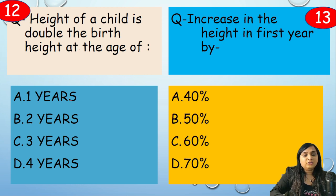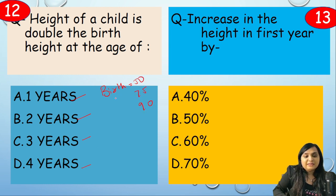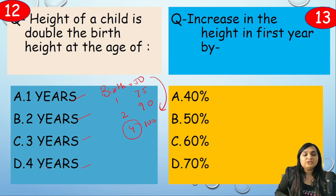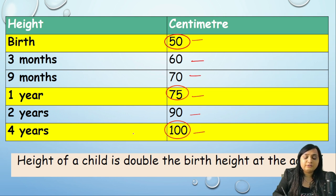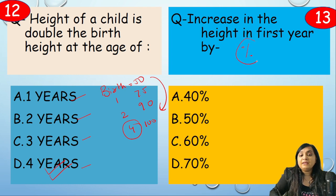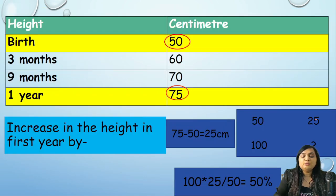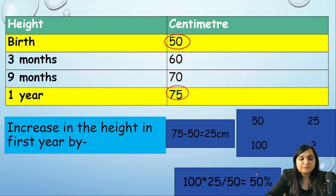Next question: height of a child doubles the birth height at what age — 1 year, 2 years, 3 years, or 4 years? Birth height is 50 cm; 1 year is 75 cm; 2 years is 90 cm; 4 years is 100 cm. Since 50 cm doubles to 100 cm at age 4 years, the correct answer is option D, 4 years. Milestones: 3 months 60 cm, 9 months 70 cm, 1 year 75 cm, 2 years 90 cm, 4 years 100 cm.